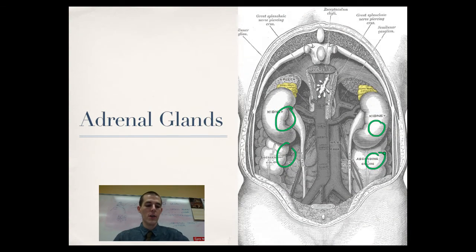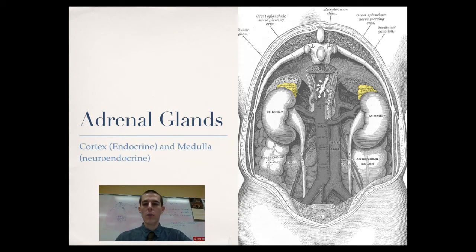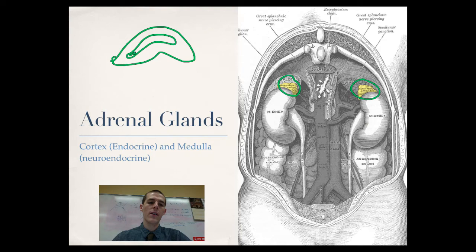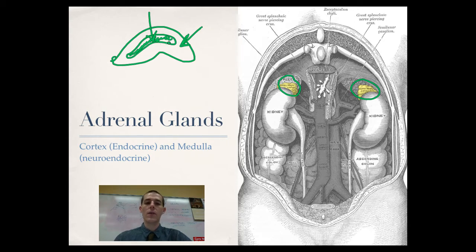Next up are the adrenal glands. They sit on top of the kidneys and are actually a two-part gland — similar to how the pituitary gland has a neuroendocrine side and a true endocrine side. If you cut the adrenal glands in half, there are two distinct portions: the outer section known as the adrenal cortex, and the inner section known as the medulla. The cortex is the true endocrine portion — it responds to hormones and sends out hormones. The medulla is neuroendocrine, meaning it responds to signals from the nervous system.